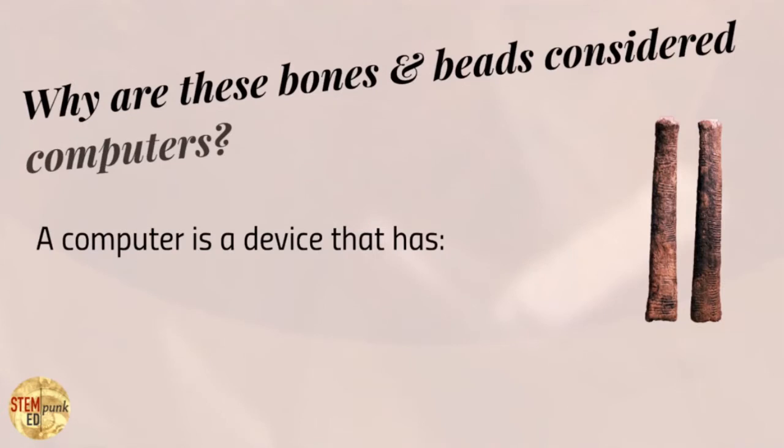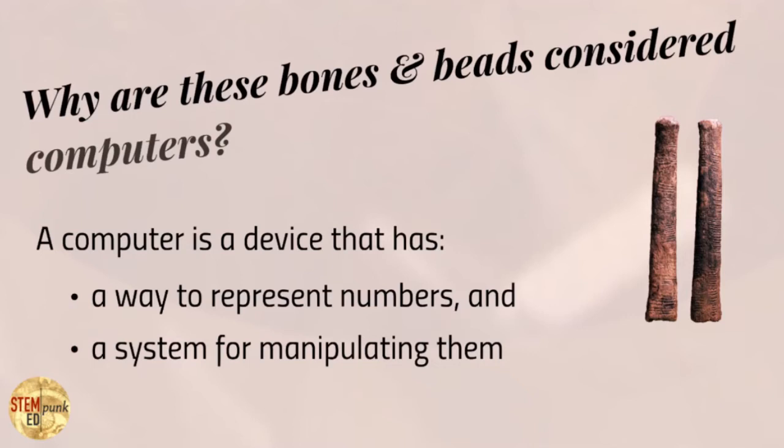So again, why are these bones and beads the first era of analog computing? How are these computers? In every case, they are a device that has a way to represent numbers and a system for manipulating them. In the case of the slide rule, the numbers are on the scales, a way for manipulating them involves moving the slide at the center, and this thing called a cursor across the top, to create equations and their solutions.